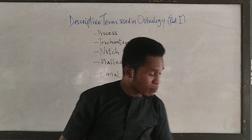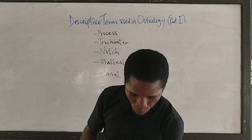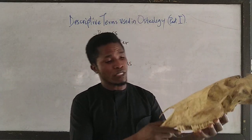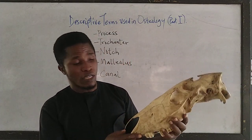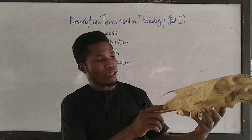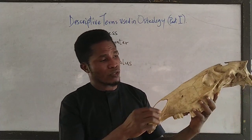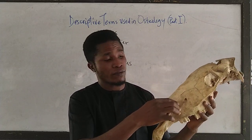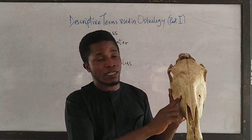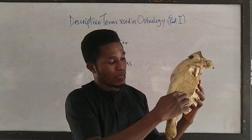The fifth term we shall be looking at is a canal. A canal is a tubular opening or passage through a bone. Looking at this skull here, we have these canals. For example, the infraorbital foramen leads into the infraorbital canal — so this foramen actually leads into the infraorbital canal.